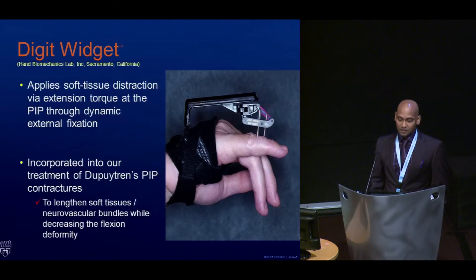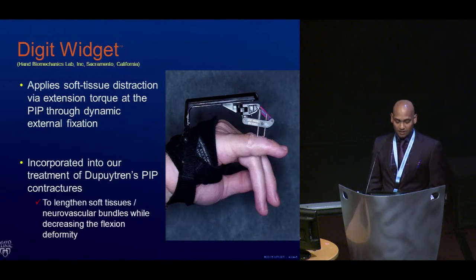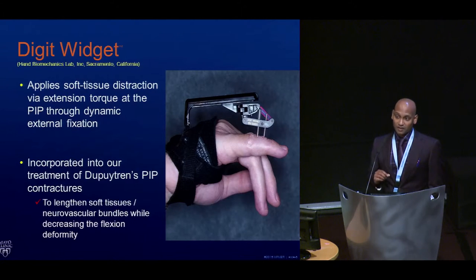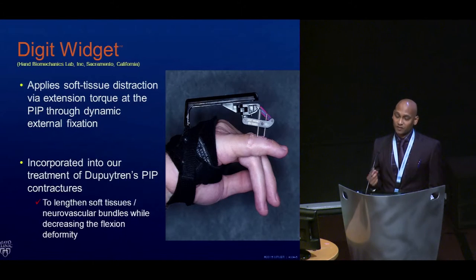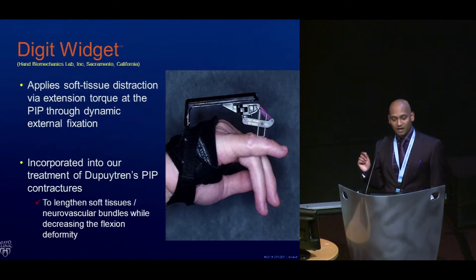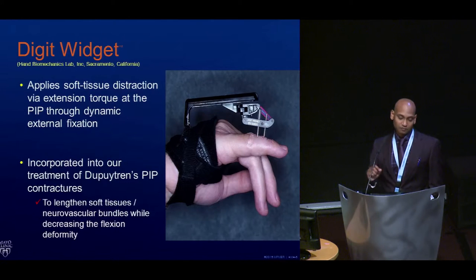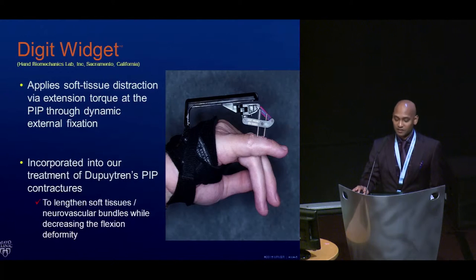This has been incorporated into our treatment algorithm as an alternative. What it effectively does is lengthen the soft tissue over time. That way, if you have to perform fasciotomies, you now have an increased soft tissue envelope with skin. Also, you're not acutely stretching the neurovascular bundle, which could cause arterial spasm leading to ischemia.